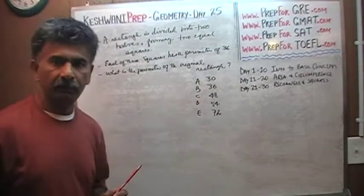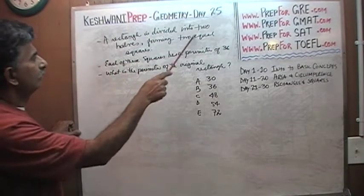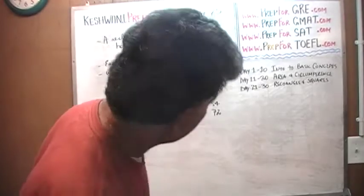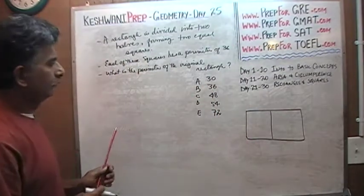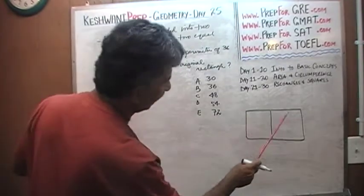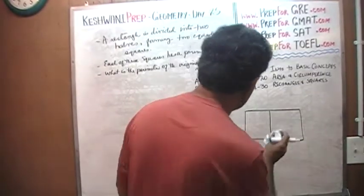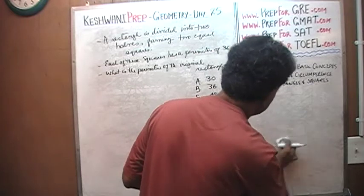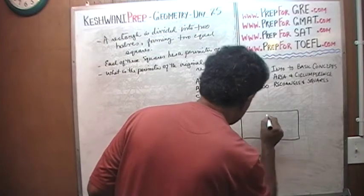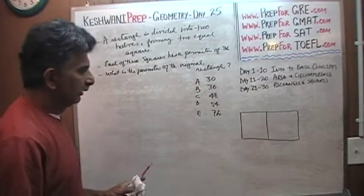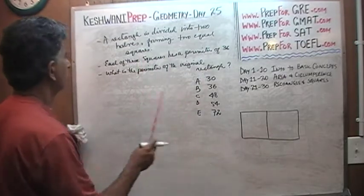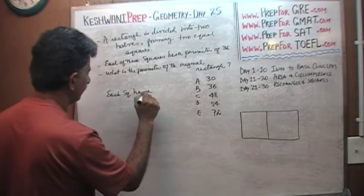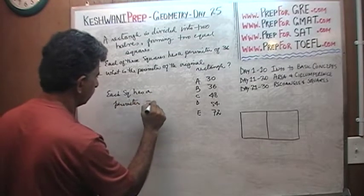I am going to read it to you just in the event that you have trouble with my handwriting. It says our rectangle is divided into two halves. We have a rectangle and we are going to divide it into two halves forming two equal squares. These two squares are equal — we are told that. Each of these squares has a perimeter of 36.